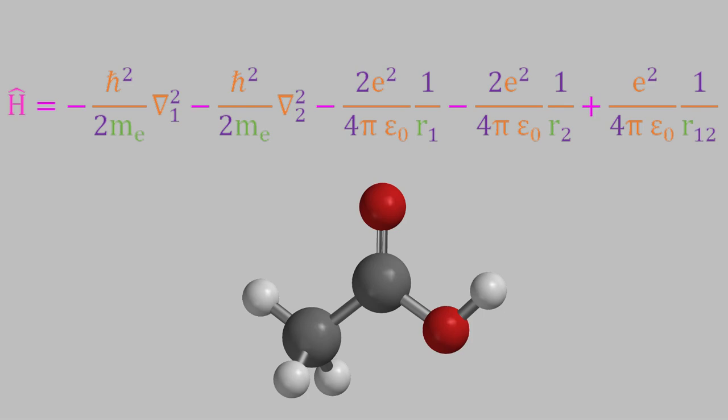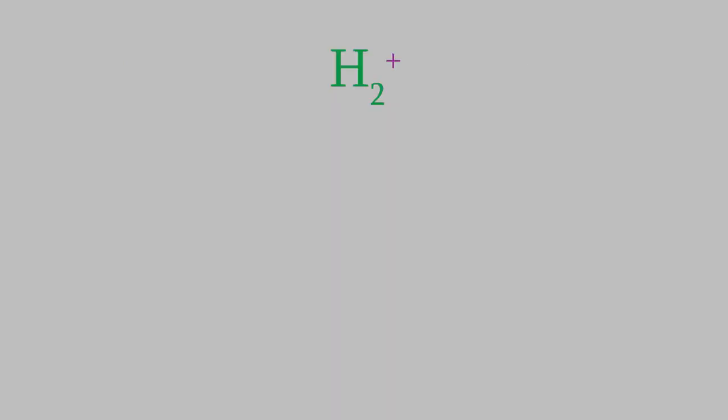To start, let's think about the very simplest molecule we can have: the hydrogen plus ion. This system consists of three particles: two nuclei with an atomic number of one, and an electron. What will its Hamiltonian look like?